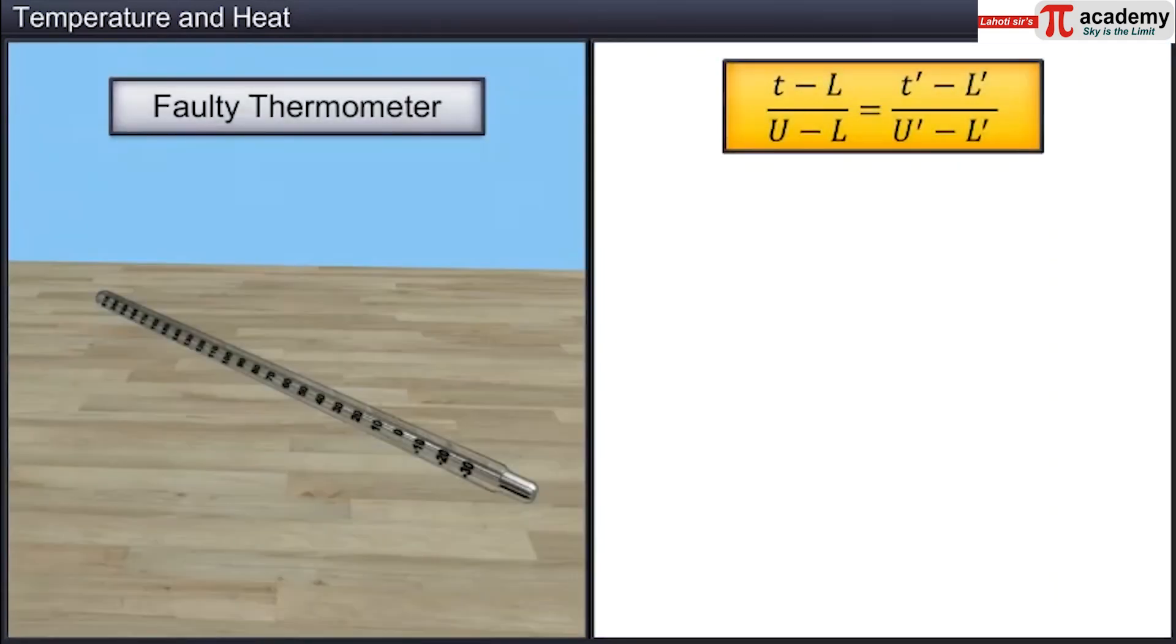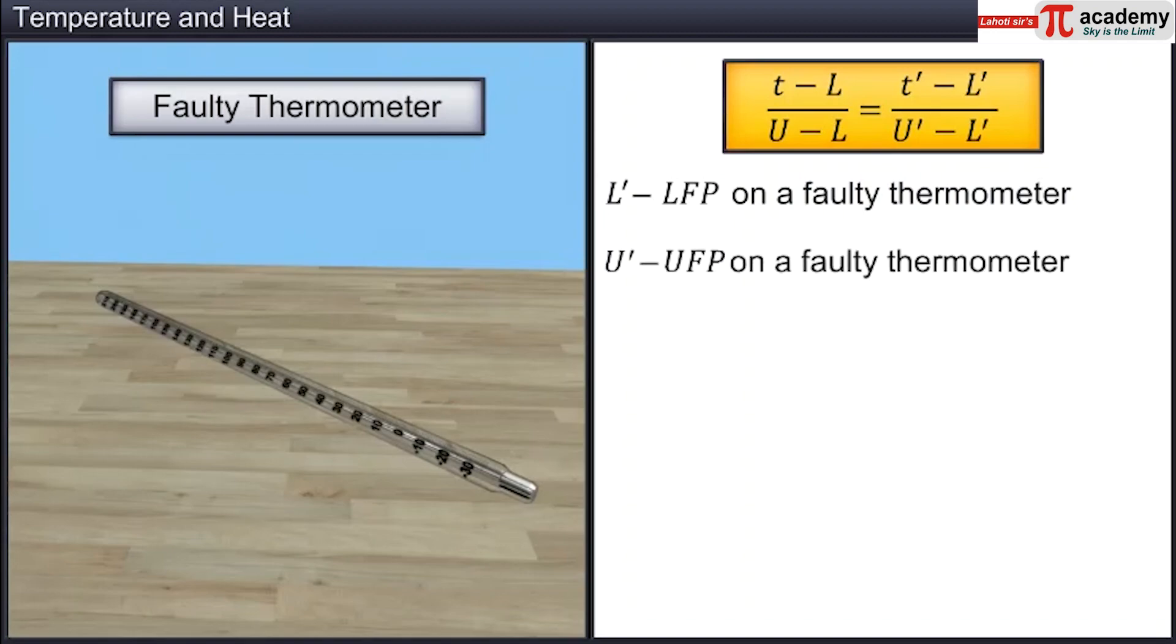The same relation can be extended to find the corrected temperature shown by a thermometer which is calibrated incorrectly. If L dash equals LFP on a faulty thermometer, U dash equals UFP on a faulty thermometer, T dash equals temperature of the body read by the faulty thermometer,